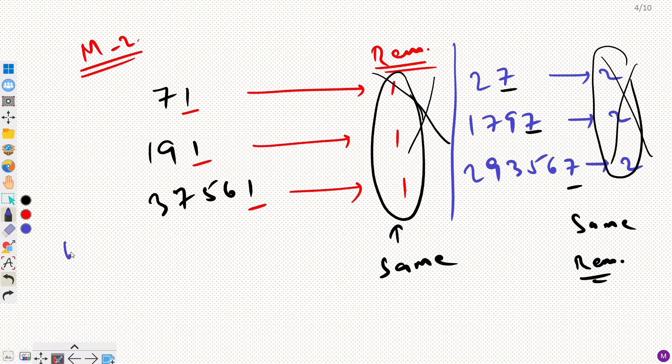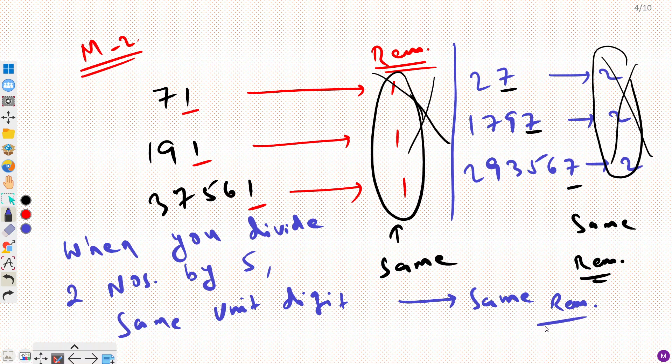Let me write this. When you divide 2 numbers by 5, same unit digit, this would imply that same remainder. And this is a big property. This will help us here.